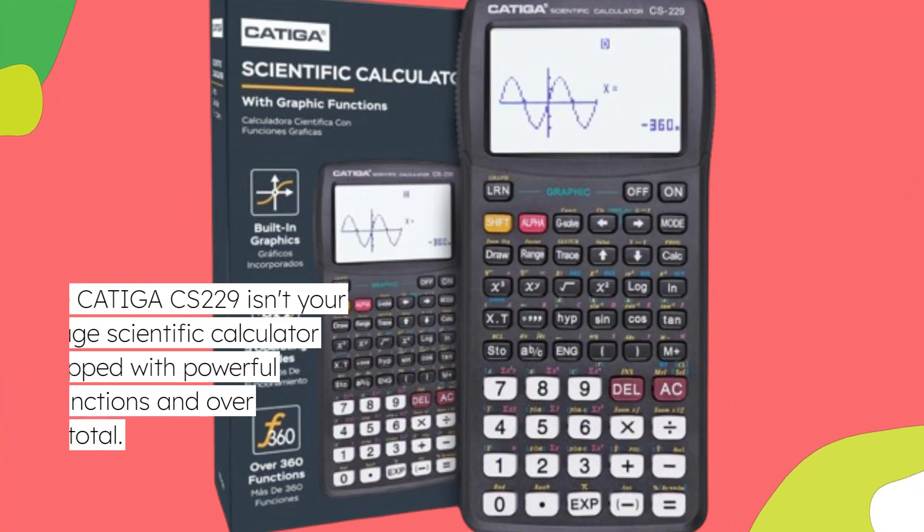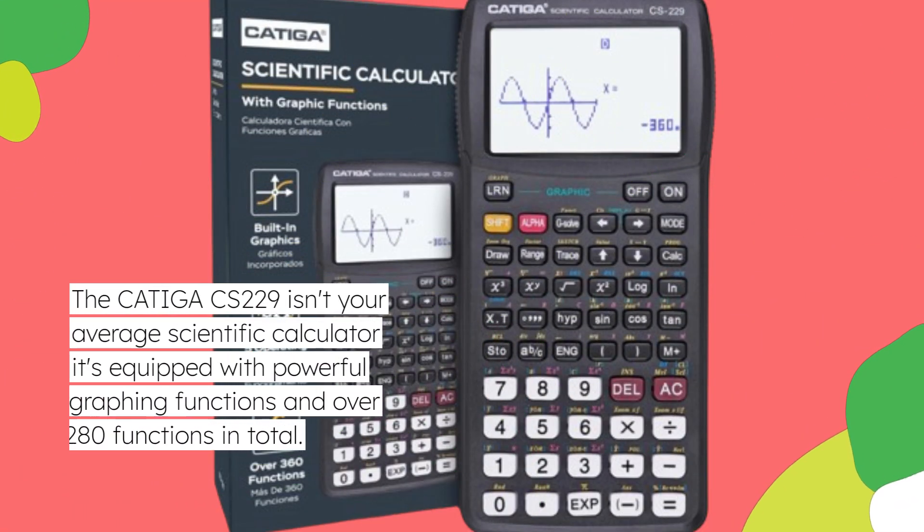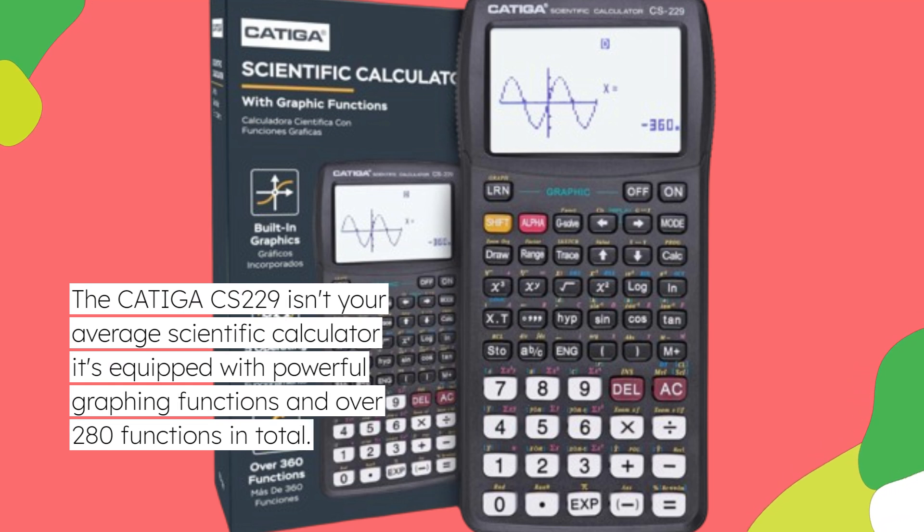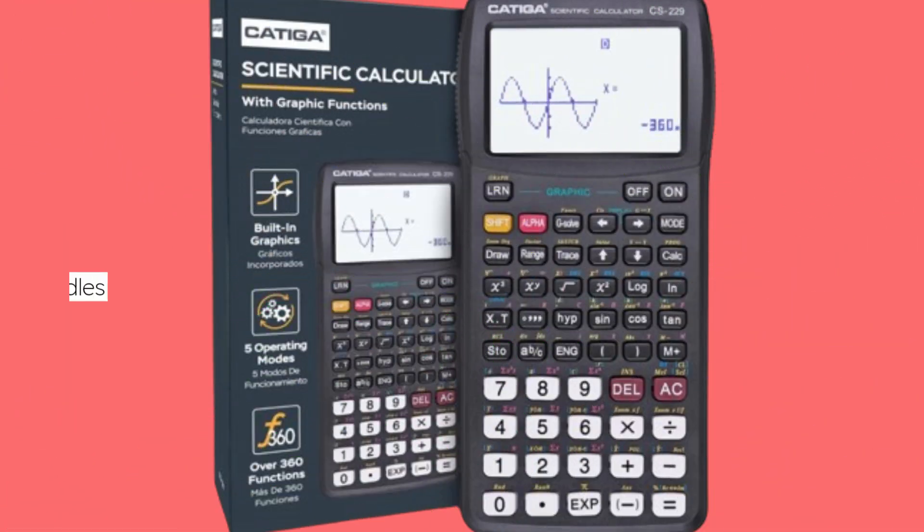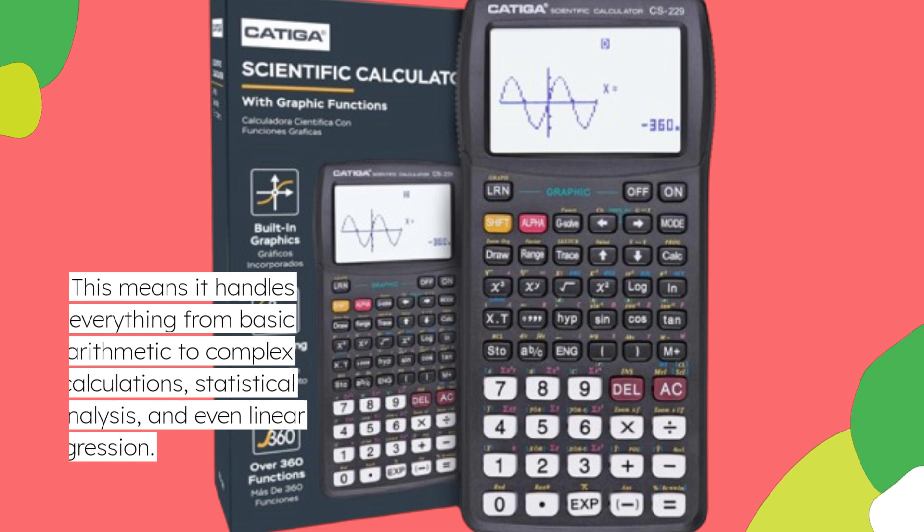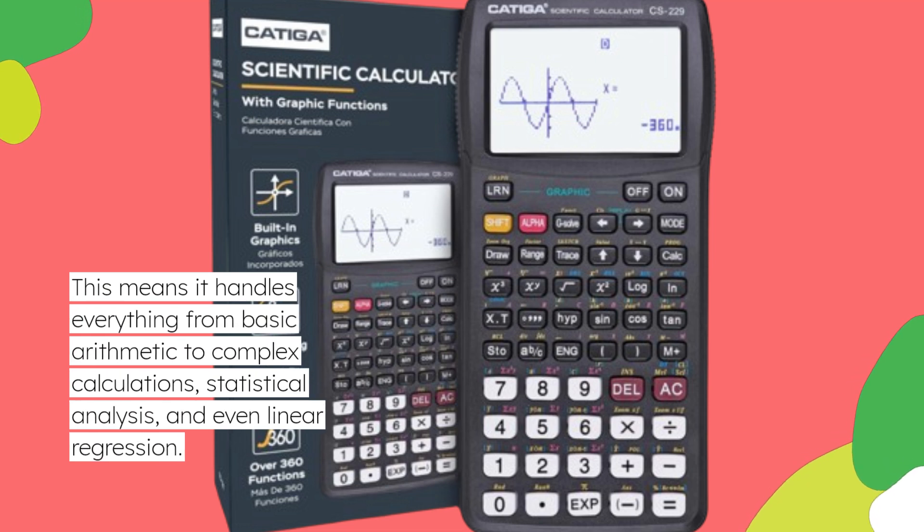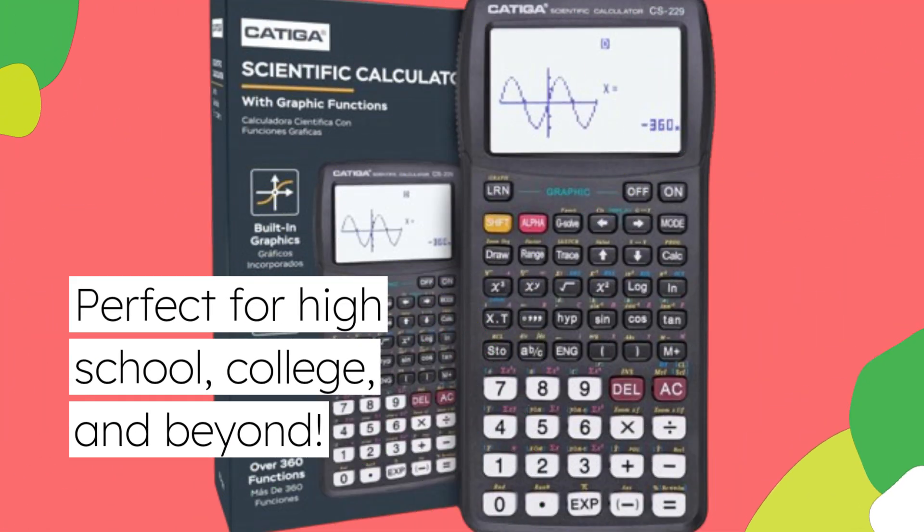The CATIGACS 229 isn't your average scientific calculator. It's equipped with powerful graphing functions and over 280 functions in total. This means it handles everything from basic arithmetic to complex calculations, statistical analysis, and even linear regression. Perfect for high school, college, and beyond.